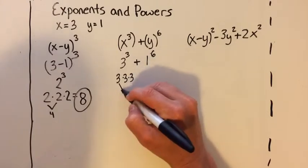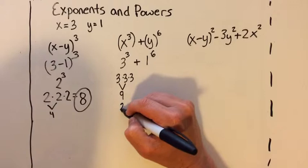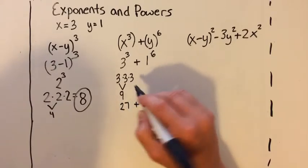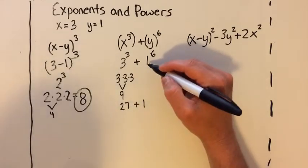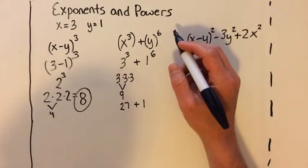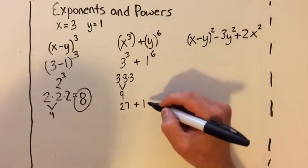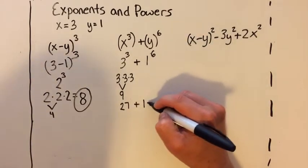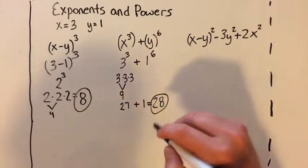3 times 3 times 3... I know 3 times 3 is 9, times 3 is 27. And that's going to be plus 1 to the sixth power, which is 1. Remember, you can have 1 to any power and that's going to be 1, because 1 times itself a bunch of times is just 1. So that is going to be 28.